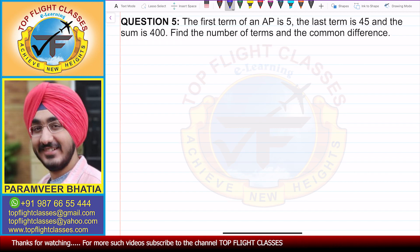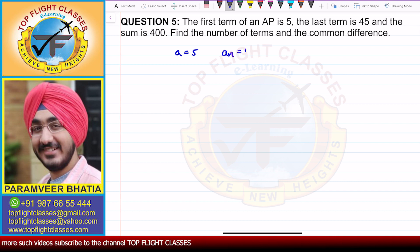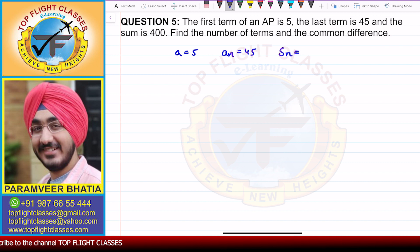The first term a is equal to 5, the last term an is equal to 45, and the sum is equal to 400. Now we have to find the number of terms and the common difference.